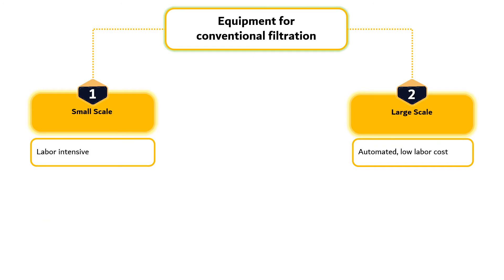Equipment for conventional filtration varies widely but can be categorized into small-scale and large-scale application. Four common types of small filters are plate and frame press, horizontal plate, vertical leaf, and candle type that are labor-intensive.